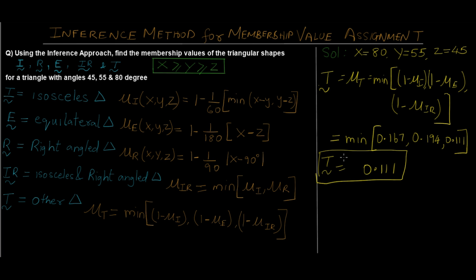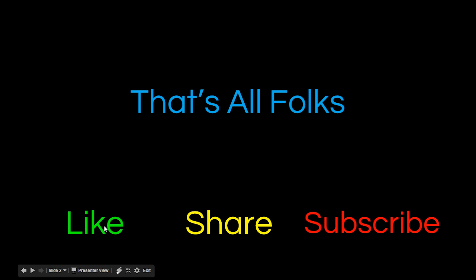That's it for this video tutorial and this numerical. It's pretty simple — you just have to remember these formulas, and the most important thing is the property x ≥ y ≥ z. Whenever angles are given, always assign the largest as x (or a, or whatever notation you have) and make changes in the formula accordingly. These are the only two things you need to remember; otherwise the numerical is straightforward. I hope you understood — if you have any queries, put them in the comments, give it a thumbs up, share with your friends, and don't forget to subscribe. Peace!